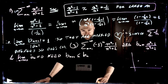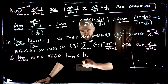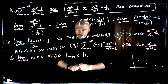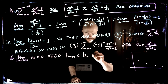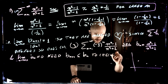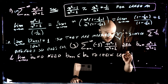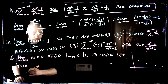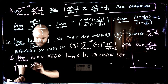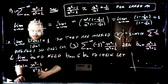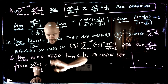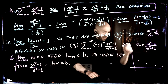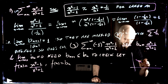Take the derivative of what? This is just a sequence, so we need to take the derivative of the function F that recovers this sequence. Let F be a function such that F(n) exactly equals our sequence terms. So on our picture, this function goes through our points exactly. We just need to check that the derivative is negative from some point onwards.